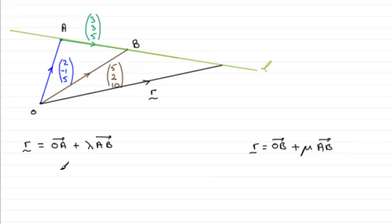So we could now just fill in our values here, and if we had O to A it's going to be 2 minus 1, 5, 2 minus 1, 5, and then plus lambda in the direction A to B, which would be 3, 3, 3, 5, and you could leave it like that.